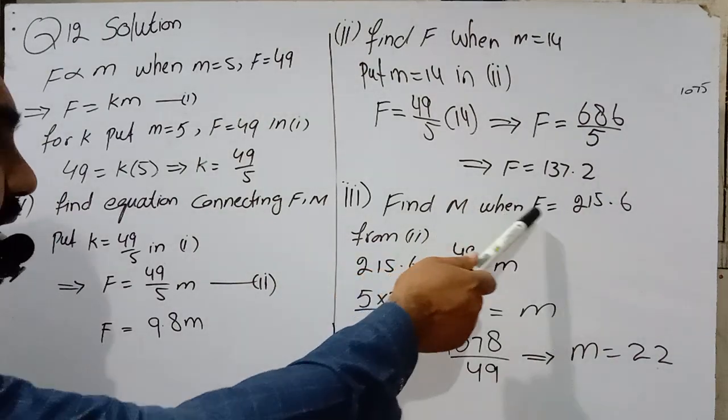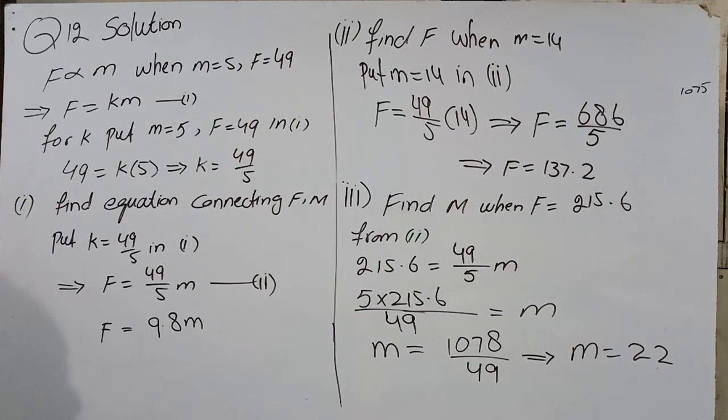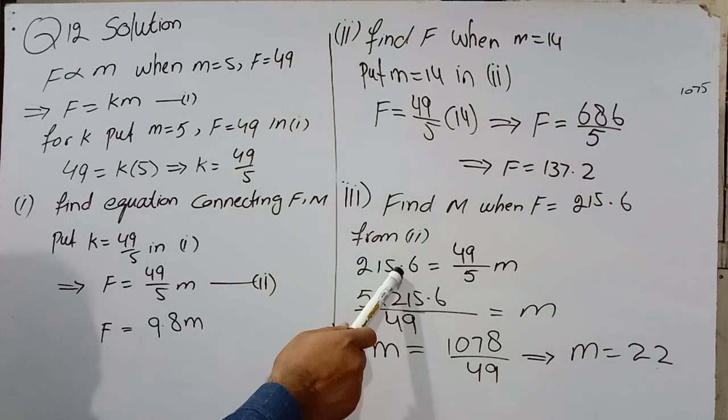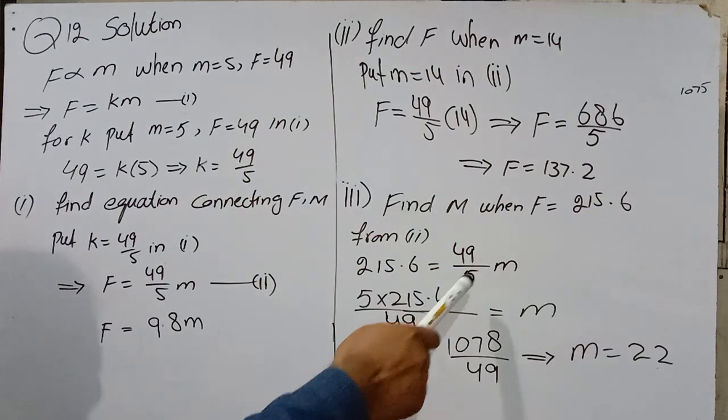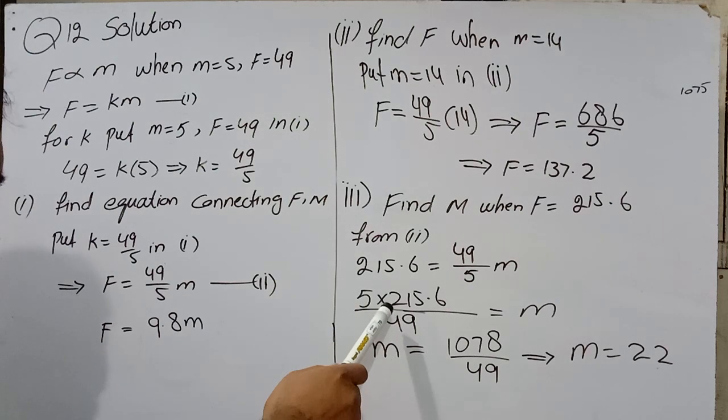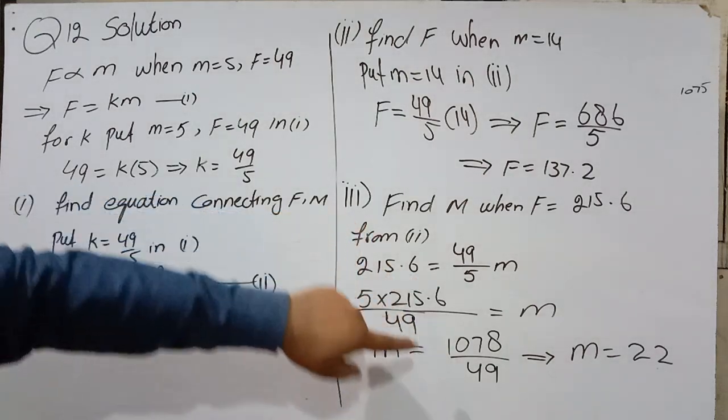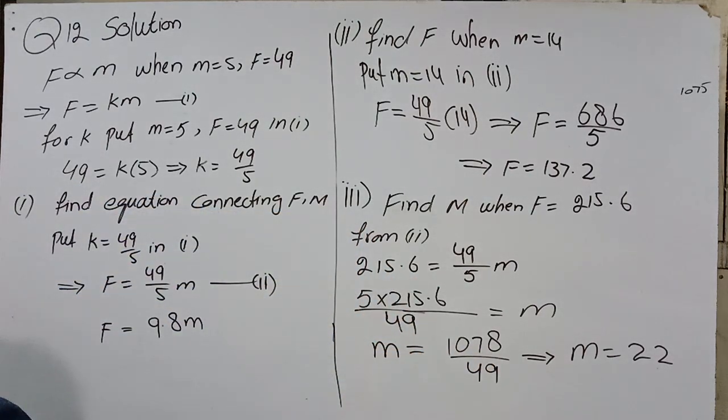Part 3: Find M when F = 215.6. From equation 2 again: 215.6 = (49/5)M. 5 is multiply, other side divide. Multiply the upper fraction numerator: 1078. Divide by 49: M = 22. This is the third part.